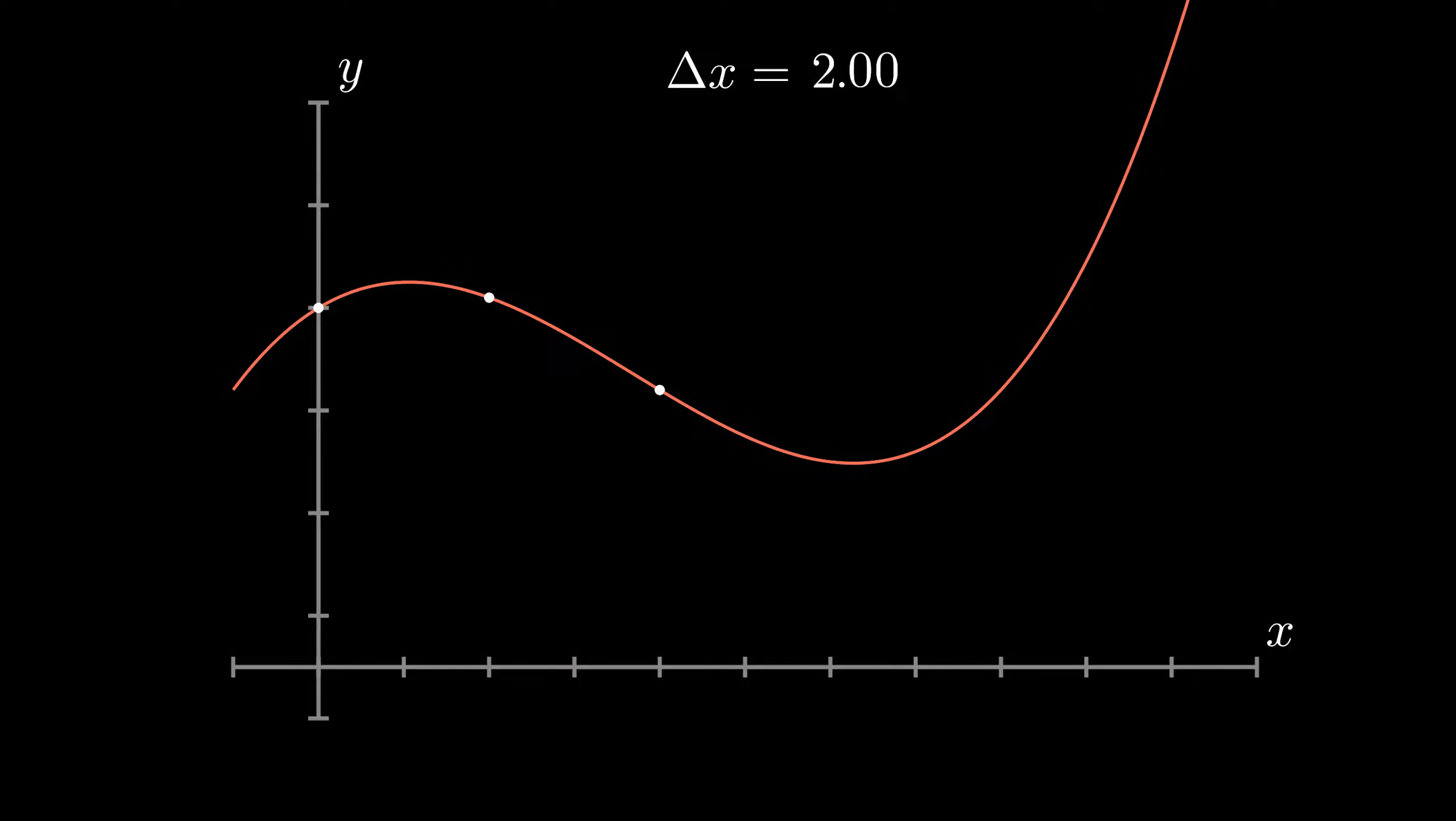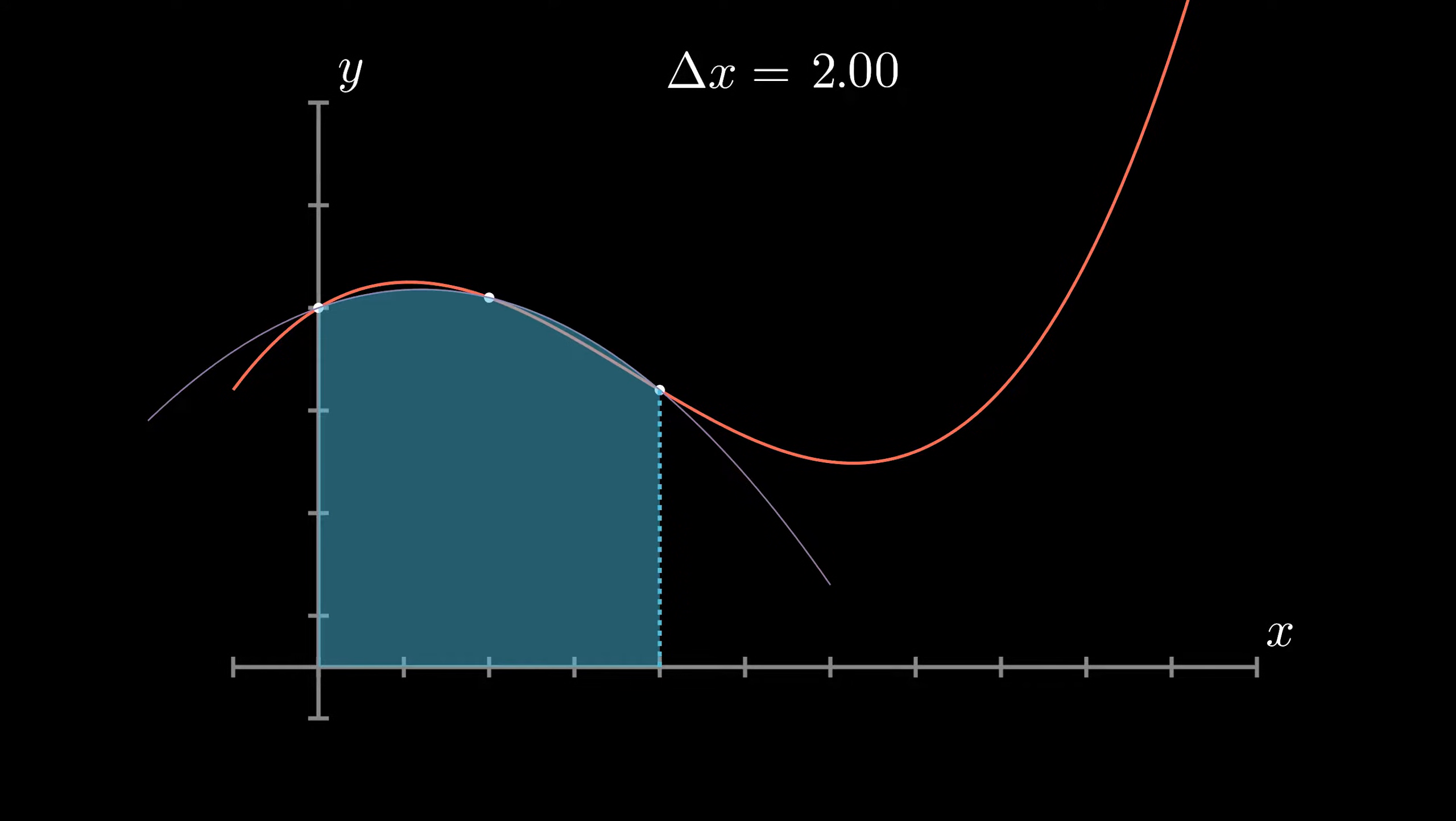Then we take three points spanning two intervals, approximate the function with the parabola passing through these three points, and find the area under that parabola instead of the function itself.